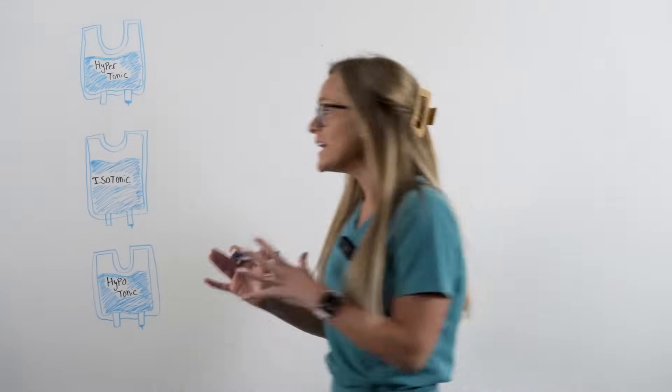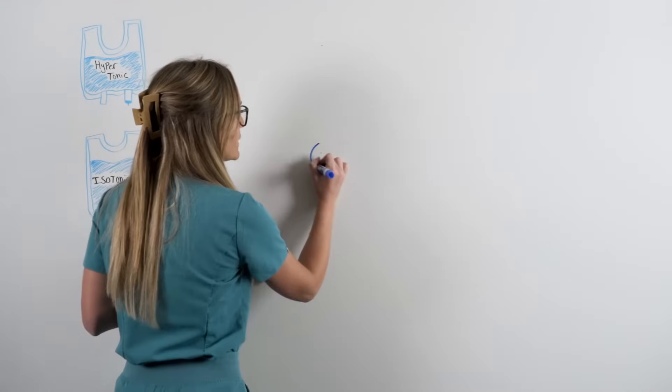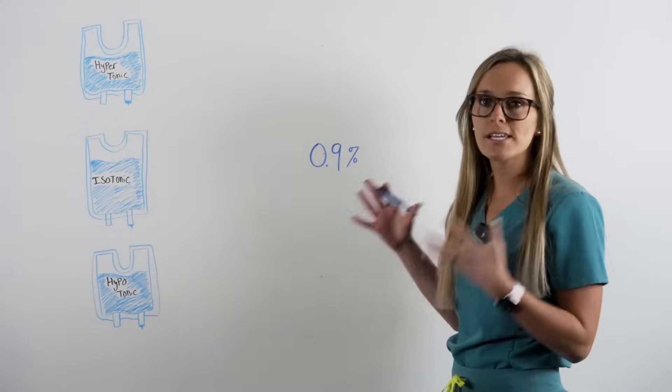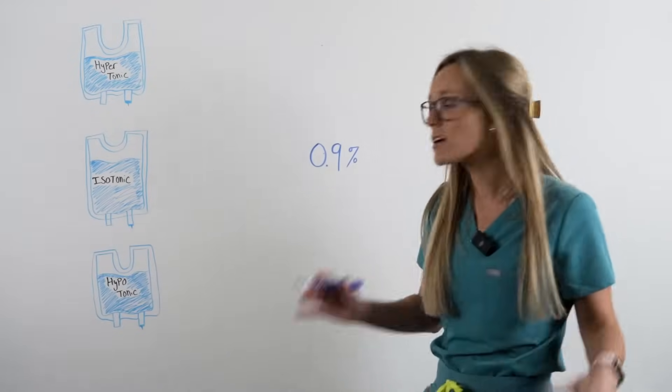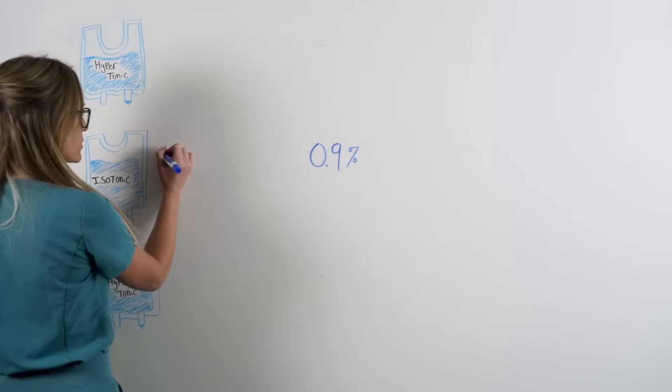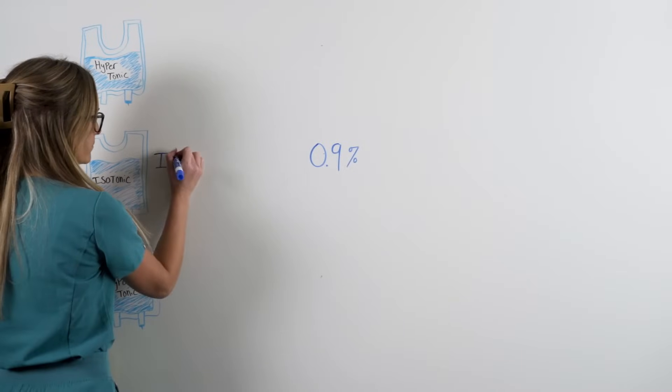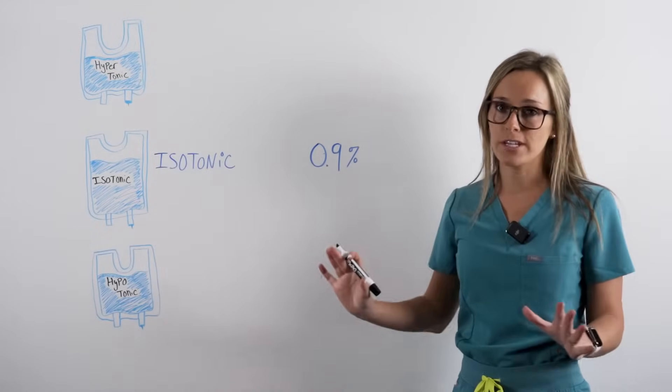First, we're going to start off with our base number of 0.9%. This is like 0.9% sodium chloride, which is the most common type of isotonic solution. This number is really important. This is our base number for our entire video.